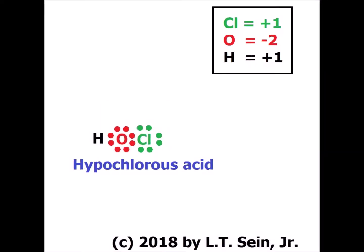Here we have the molecular structure of hypochlorous acid. The chlorine brings in seven valence electrons, the oxygen atom brings in six, and the hydrogen atom brings in one, giving us a 14-electron system. Oxygen is more electronegative than either chlorine or hydrogen. Therefore, any electrons shared between oxygen and hydrogen, or between oxygen and chlorine, are counted towards oxygen and color-coded as red. Chlorine started with seven electrons, and now it has six green ones, so it has lost one electron and has an oxidation number of plus one.